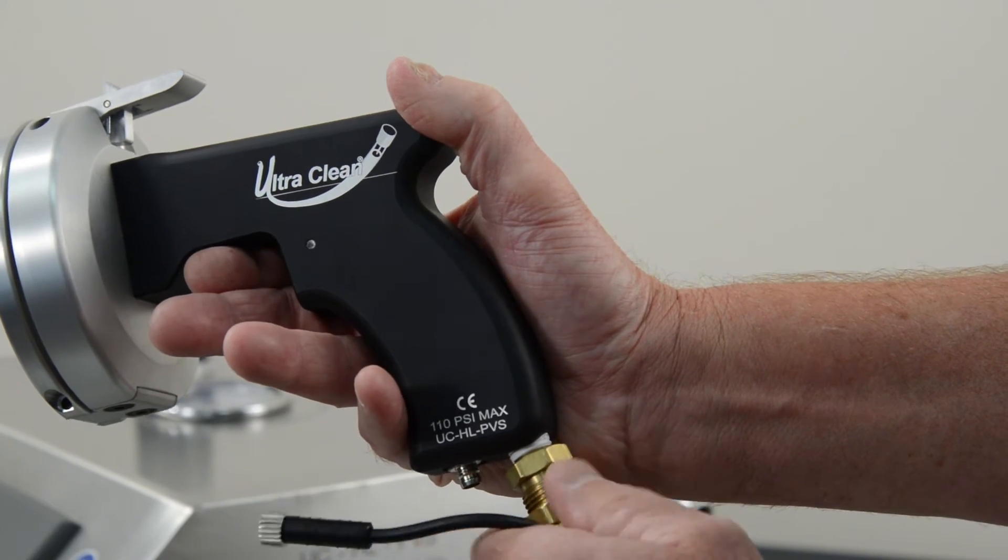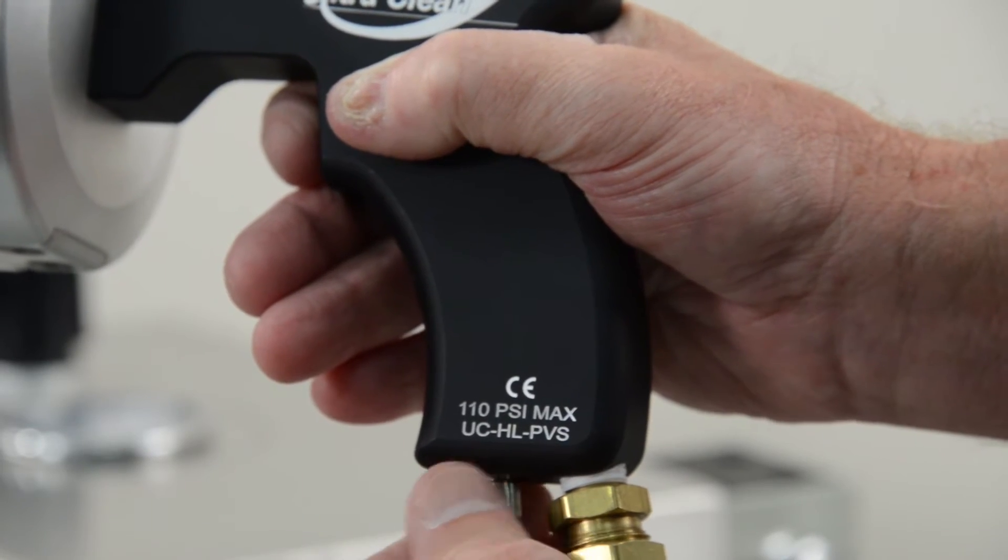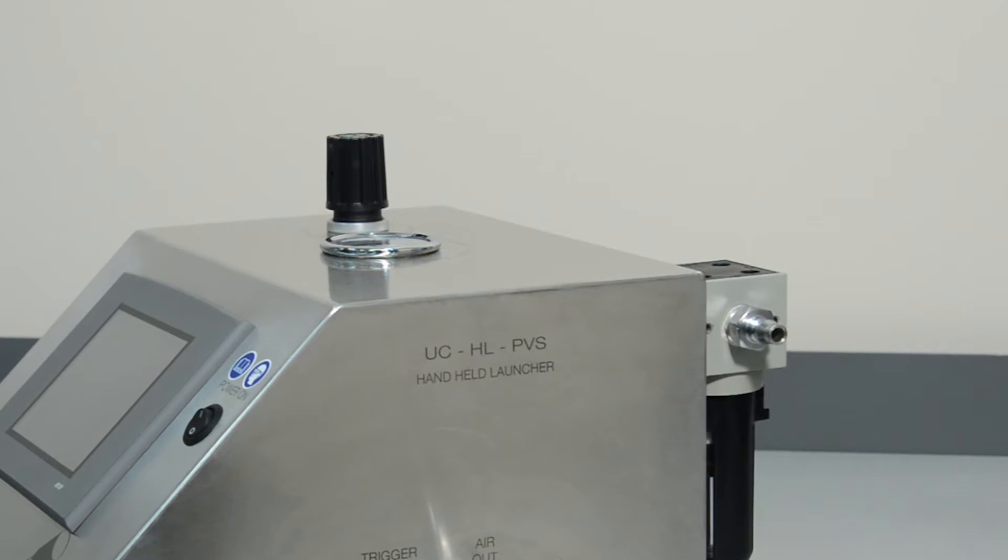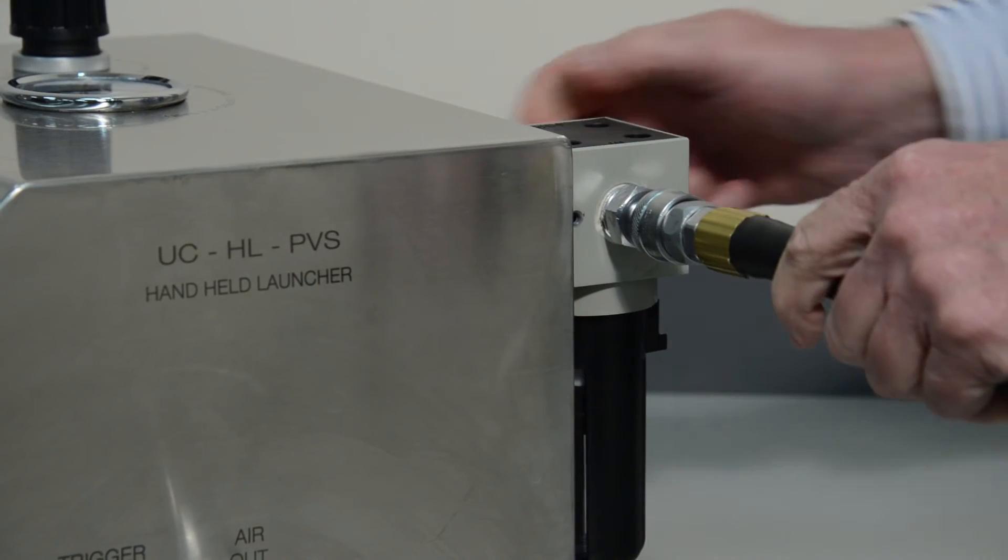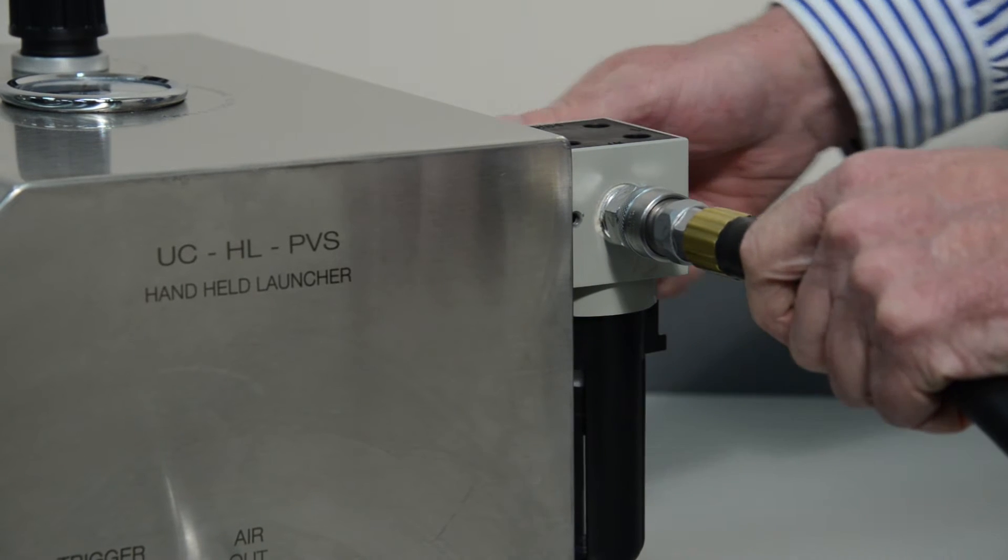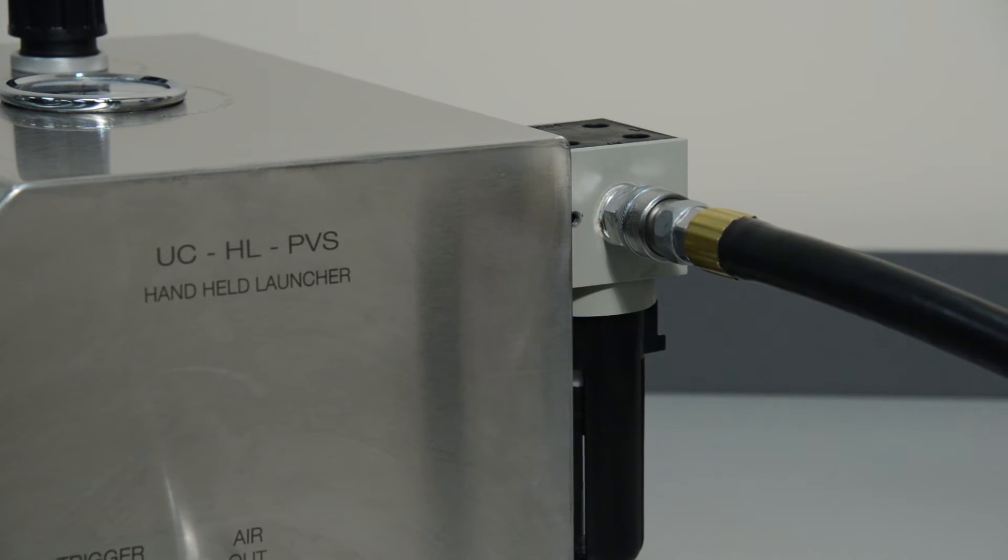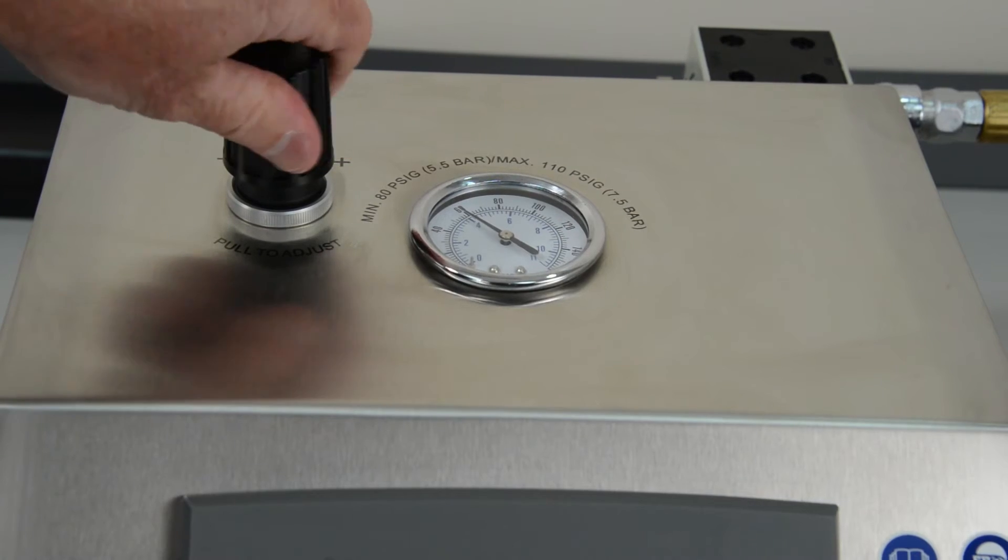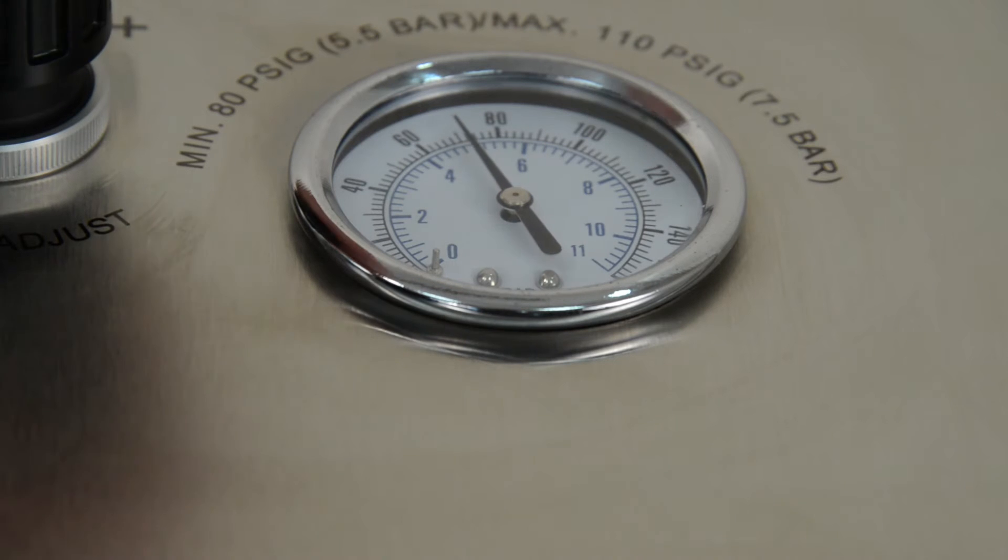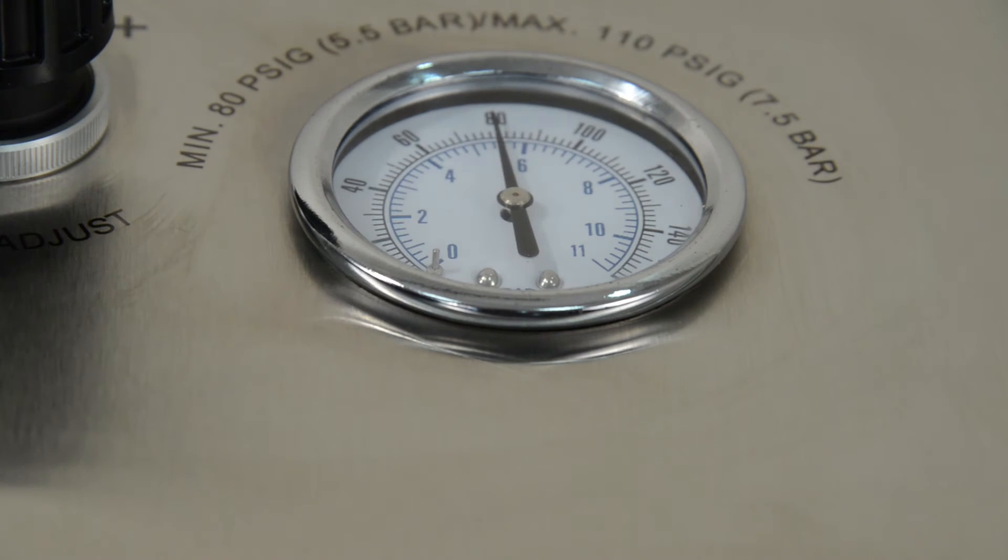Secure each connection by tightening the nut on each end of the cable. Connect a half-inch ID air hose to the 5-micron filter located on the back of the control station. The inlet air pressure should never exceed 110 psi or 7.5 bar. Set the pressure regulator on the control station to 80 psi or 5.5 bar.